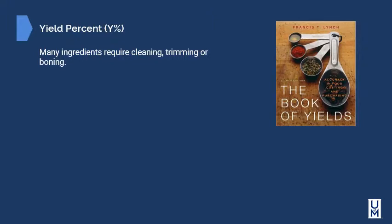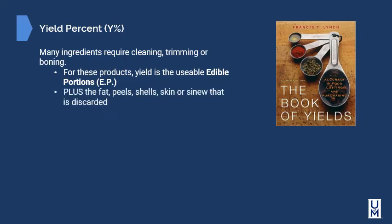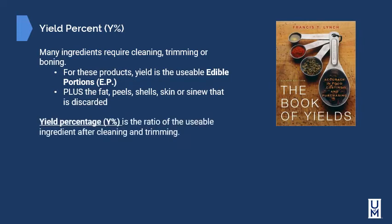Many ingredients require cleaning, trimming, or boning. For these products, yield is the usable edible portion (EP) plus the fat, shells, skin, or sinew that's discarded. Yield percentage is the ratio of the usable ingredient after cleaning and trimming. Because many ingredients have different yields, we use what's known as the Book of Yields — available in print or online — to quickly look up the yield percentage of any item, such as broccoli, to determine how much of it is usable.